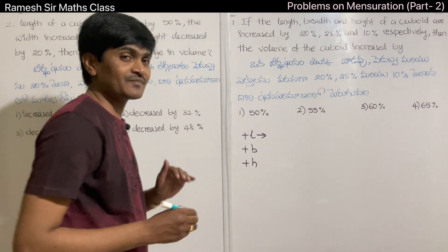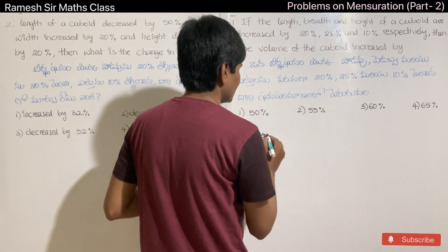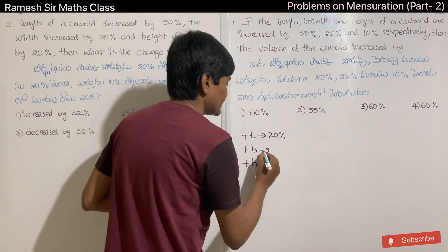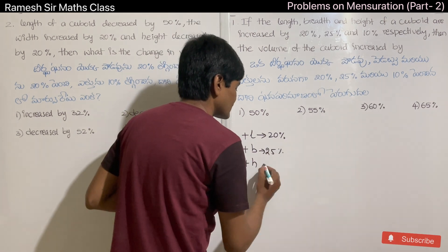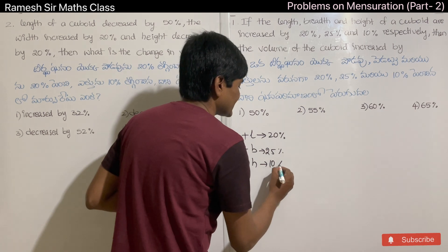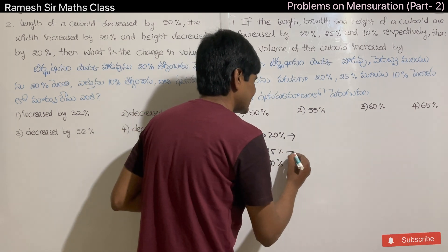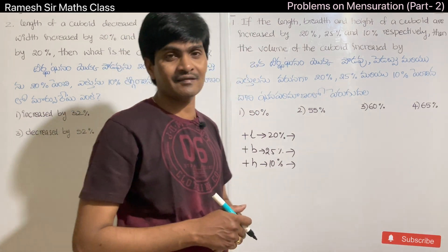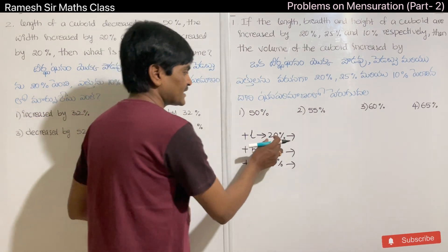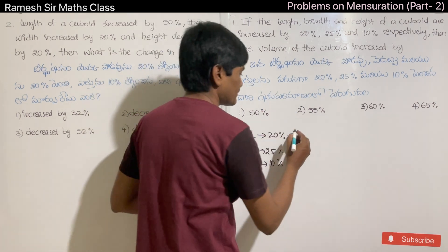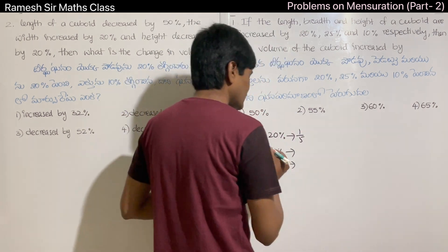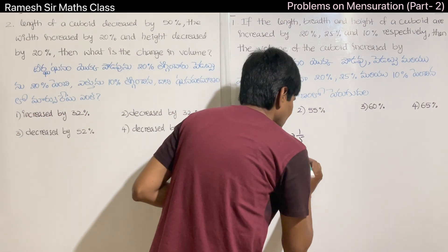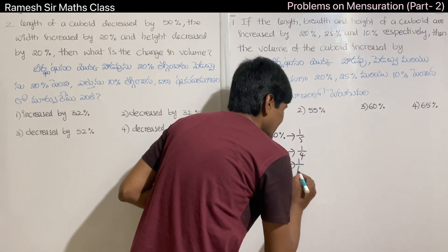One of the measurements: the length of the cuboid is increased by 20%, the breadth is increased by 25%, and the height is increased by 10%. Now, how do we convert these percentages into fractions? 20% is 20/100, which is 1/5. 25% is 25/100, which is 1/4. 10% is 1/10.